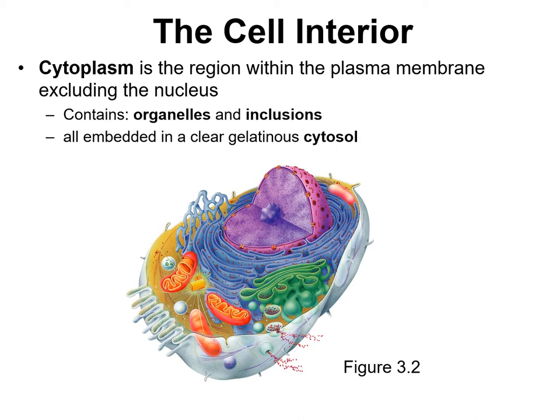Organelles and inclusions are embedded in a clear, gelatinous, semi-solid fluid called the cytosol. Think of the cytoplasm as the region, and the cytosol as the actual semi-solid gelatinous fluid found within it. Students often mix up the cytoplasm and the cytosol, so think of it this way: if the cytoplasm were a pool, the cytosol would be the water in the pool.